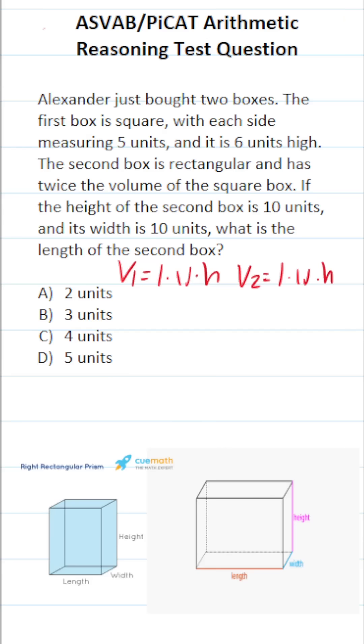Now, one thing I want to point out is that the problem told us the first box was squarish, meaning that it had a base that was in the shape of a square. In other words, its length equals its width. And according to the problem, both of those are five units.